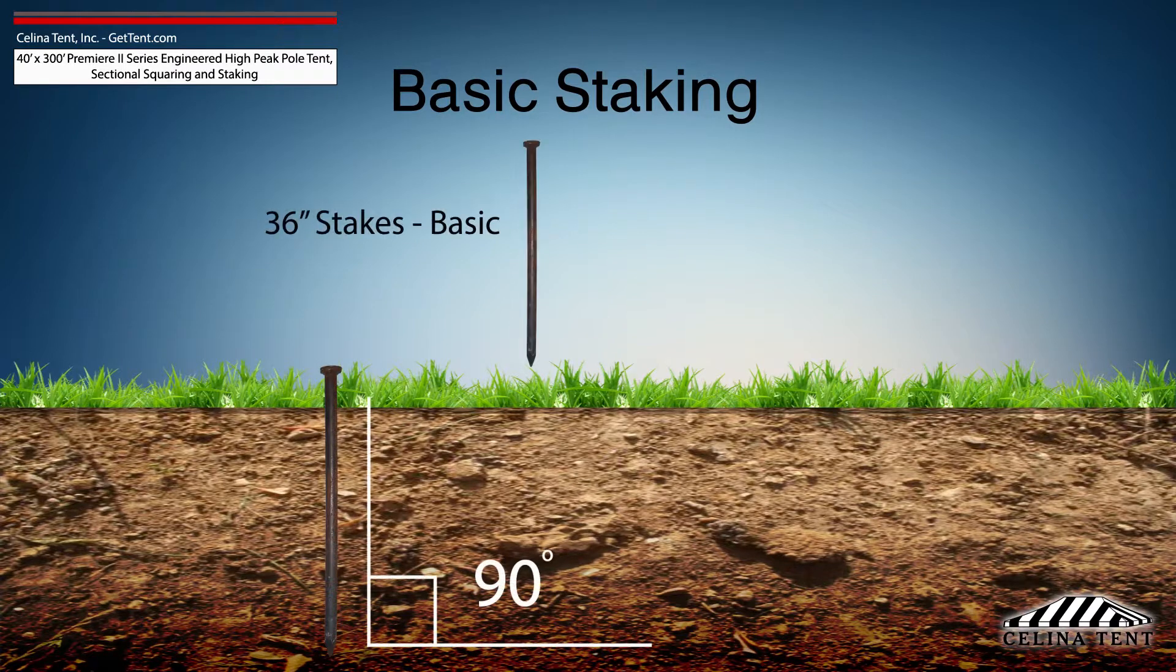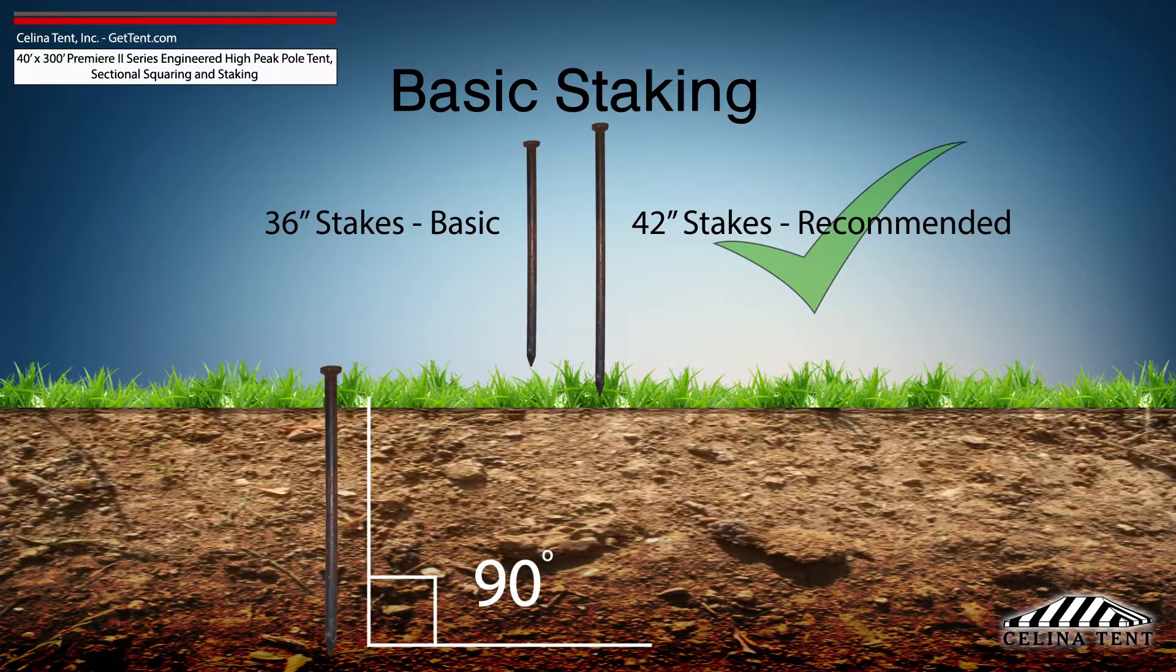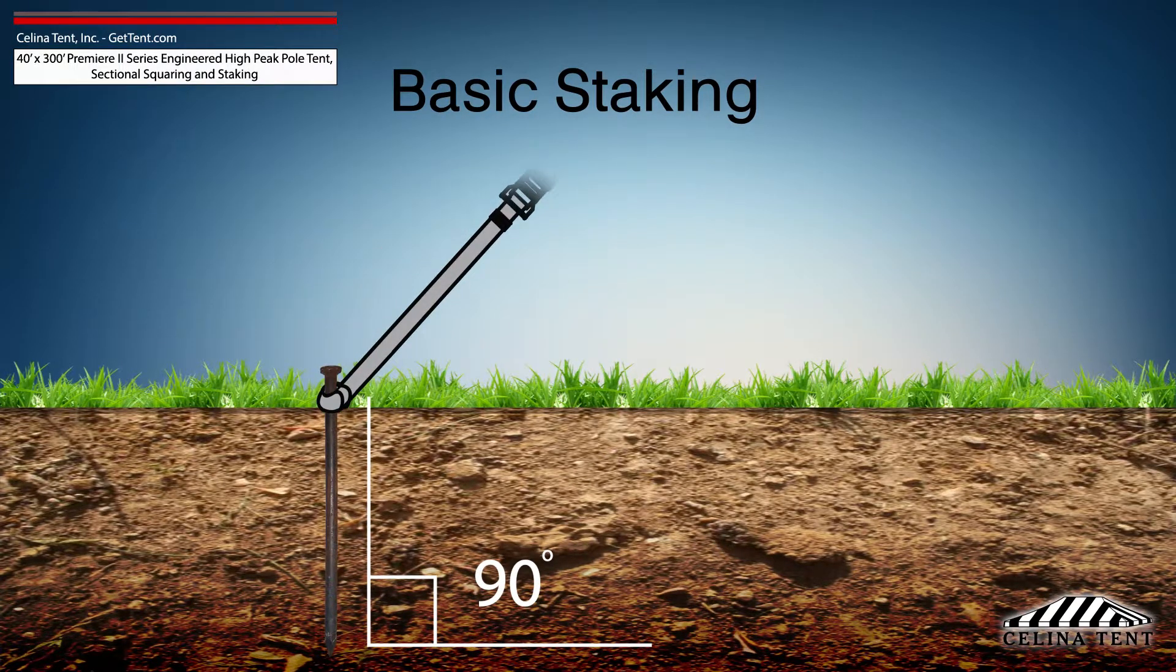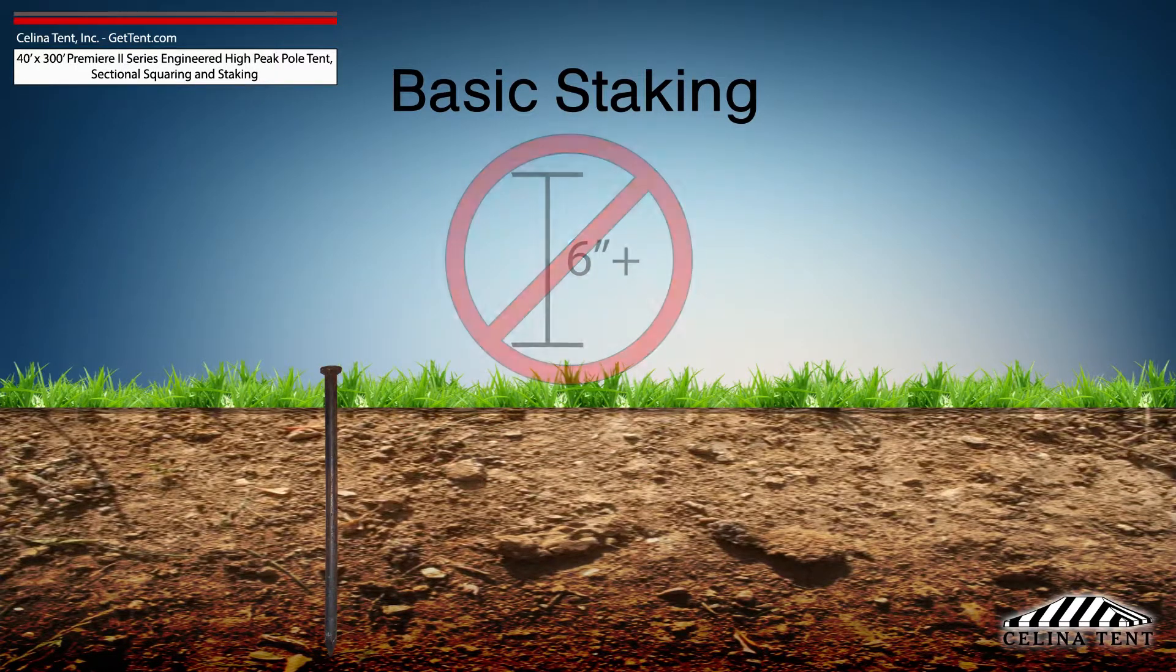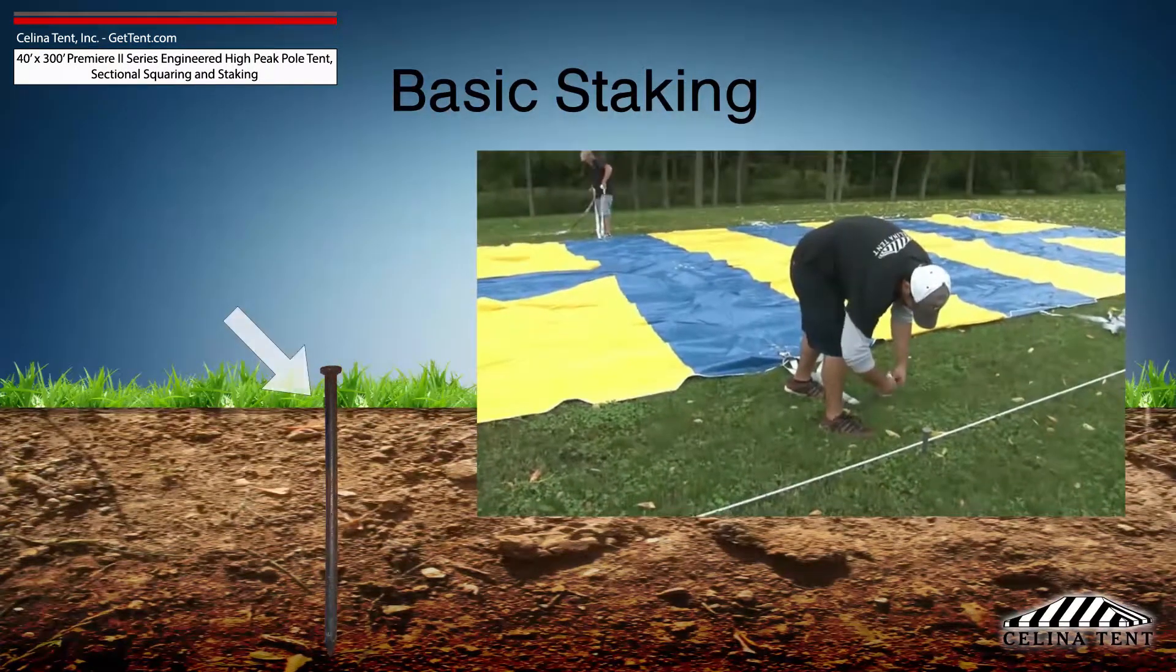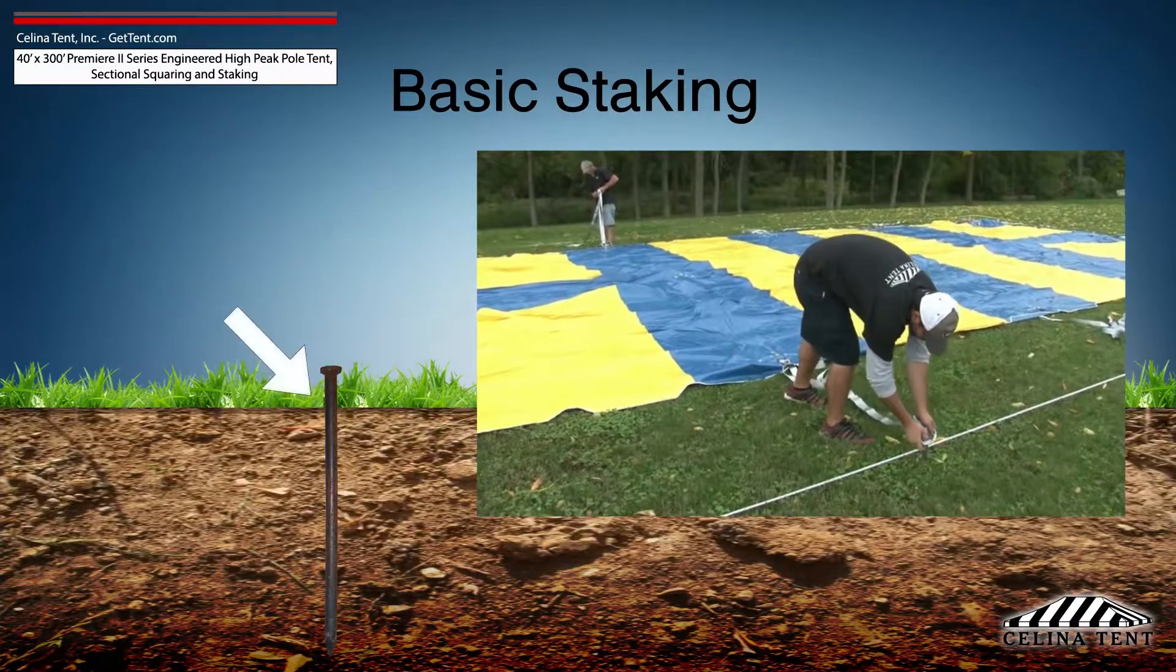Tent stakes should be driven vertically so that the stake is as close to the ground as possible with space to tie on a strap. Any length of stake protruding from the ground that is more than 6 inches will have detrimental effects on the holding power of the stake. Attach the ratchet strap or rope as close to the ground as possible to reduce strain on the stake.